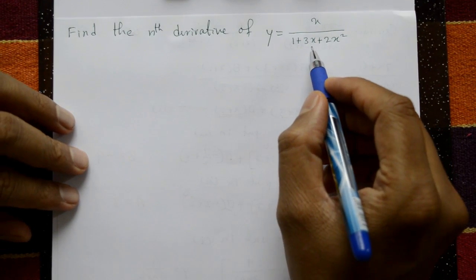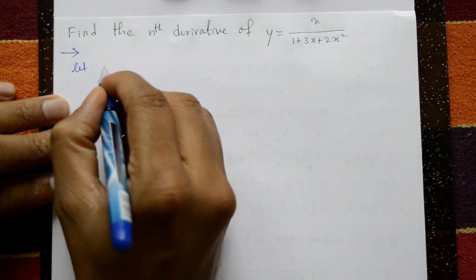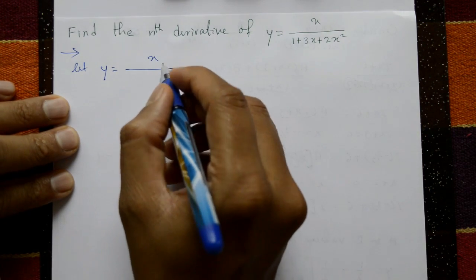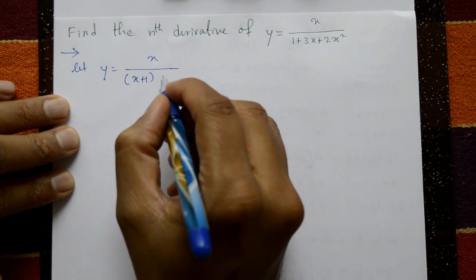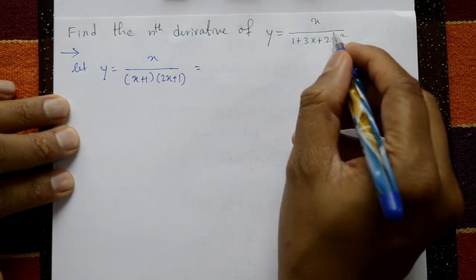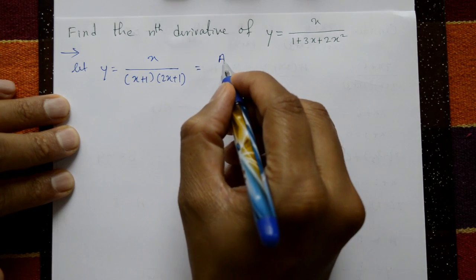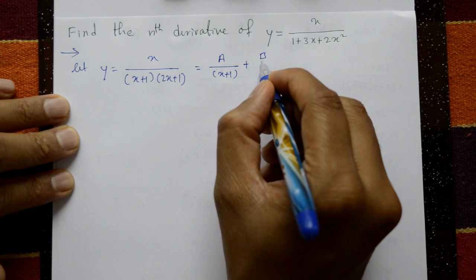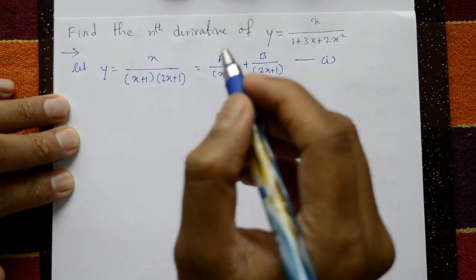Find the nth derivative of y = x / (1+3x+2x²). Rearrange the denominator: y = x / [(x+1)(2x+1)]. This is a proper fraction. Write as A/(x+1) + B/(2x+1). Call this equation number 1.